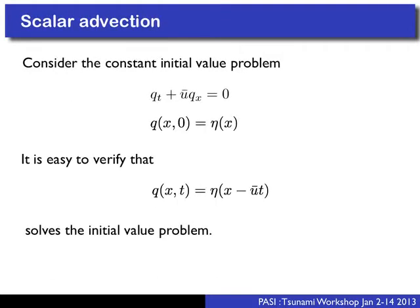Now I want to back up to a really simple scalar advection problem, because we can understand a lot about solving a Riemann problem by looking at this simple case. We have a scalar q, a constant velocity field u-bar, and some initial condition. The solution to this problem is simply eta evaluated at x minus u-bar times t. You can put this back into the PDE, differentiate with respect to time and space, and show it gives zero.